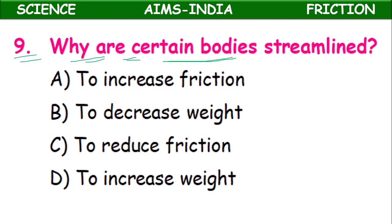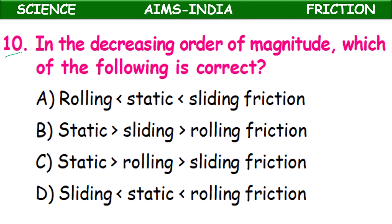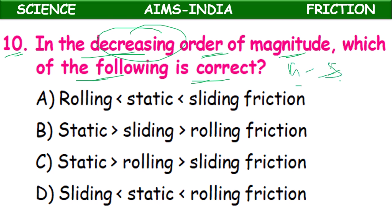Ninth question: Why are certain bodies streamlined? Certain bodies like aeroplanes, ships, and some luxury cars are streamlined to decrease friction so they move in a speedy manner. Tenth question: In the decreasing order of magnitude, which is correct? Decreasing means from greatest to smallest value. Out of rolling, static, and sliding friction — static will be greatest and rolling will be least. So: static is greater than sliding, which is greater than rolling. Option B is correct.